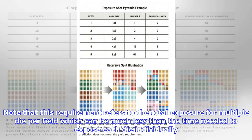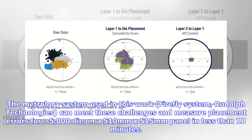Note that this requirement refers to the total exposure for multiple die per field which can be much less than the time needed to expose each die individually. The metrology system used in this work, Firefly System, Rudolph Technologies, can meet these challenges and measure placement errors for greater than 5,000 die on a 510 mm by 515 mm panel in less than 10 minutes.